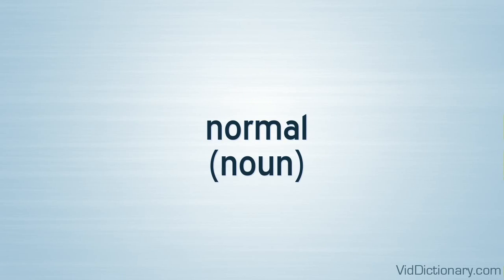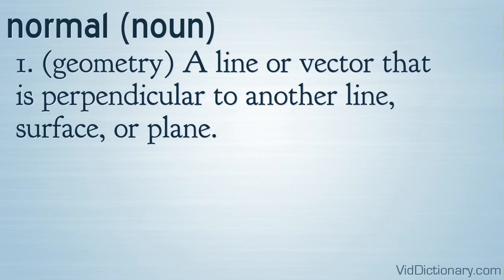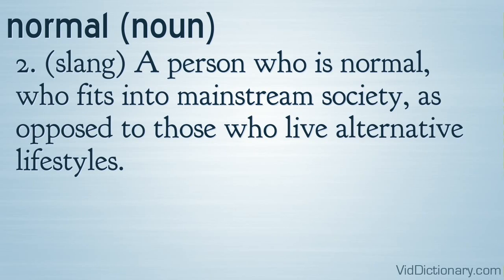Part of speech: noun. Two definitions. Definition 1: Geometry — a line or vector that is perpendicular to another line, surface, or plane. Definition 2: Slang — a person who is normal, who fits into mainstream society, as opposed to those who live alternative lifestyles.